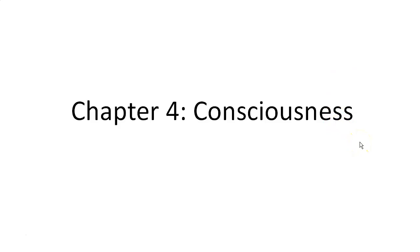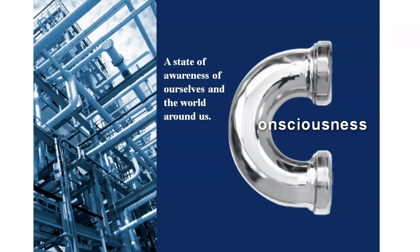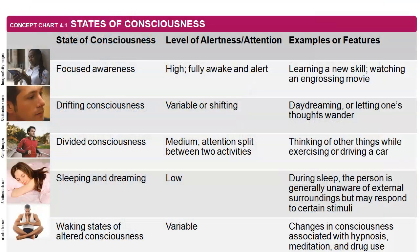We're starting with Chapter 4, which was all about consciousness. The most important thing to start with is what we mean by consciousness: a state of awareness of ourselves and the world around us. When we talk about consciousness, there are different types: focused awareness, drifting consciousness, divided, sleeping, and waking states or altered consciousness. Especially focus on altered states of consciousness — examples include being under the influence of drugs, being hypnotized, or meditating.